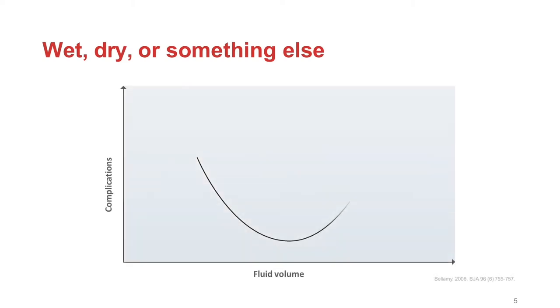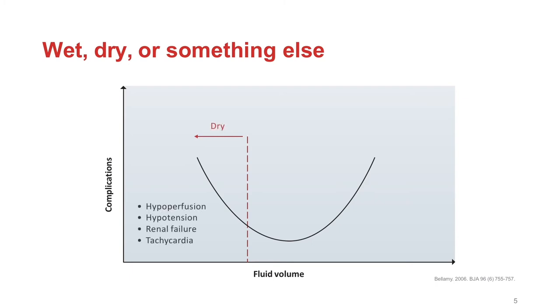This concept can be visualised with the relationship between fluid volume administered and complication rates in patients having major surgery. If too little fluid is given and the patient is hypovolemic, they will not meet their oxygen delivery needs, being far down on the steep part of the Starling curve and therefore fluid responsive. In this situation, patients are hypoperfused, tachycardic, at risk of renal injury and failure, and may also be hypotensive. On the other hand, if too much fluid is given, pushing the patient onto the plateau of the Starling curve and perhaps beyond, we see fluid overload effects including post-operative vomiting, ileus, and pulmonary dysfunction.